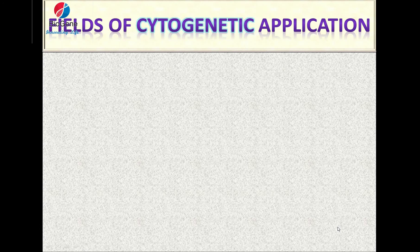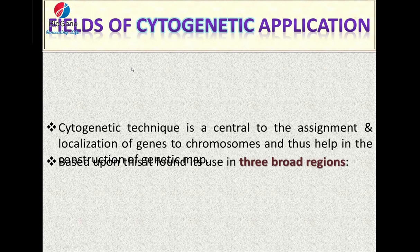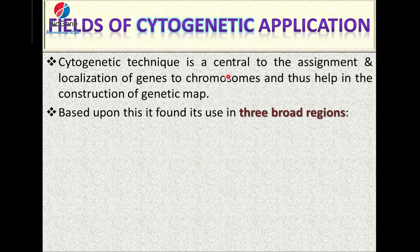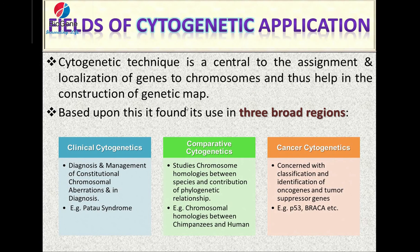What are the fields of cytogenetic application? Cytogenetics is central to the assignment and localization of genes to chromosomes, thus helping in the construction of the genetic map. Based on this, we have divided the use of cytogenetics into three broad regions: the first being clinical cytogenetics, the second comparative cytogenetics, and the third cancer cytogenetics.